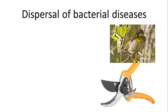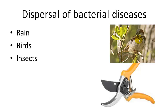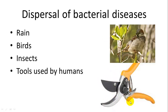Bacteria, for the most part, can't move or disperse very far, so they rely on vectors. One way they spread is through water — rain, streams, and pools — or through water droplets passing through the sky. Birds can also disperse bacteria on their feet, feathers, or beak as they move between plants. Insects will also host bacteria and spread infections. Humans can be vectors too by not cleaning tools — if you clip infected leaves and then use those same clippers elsewhere, you can spread bacteria.